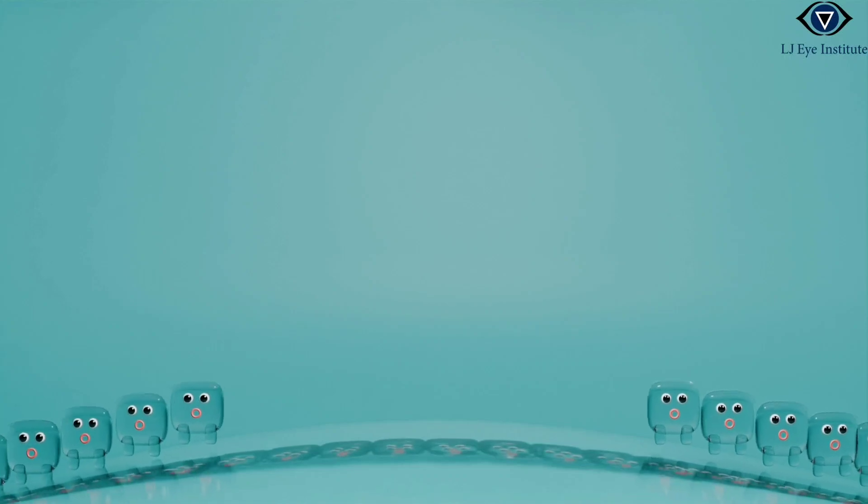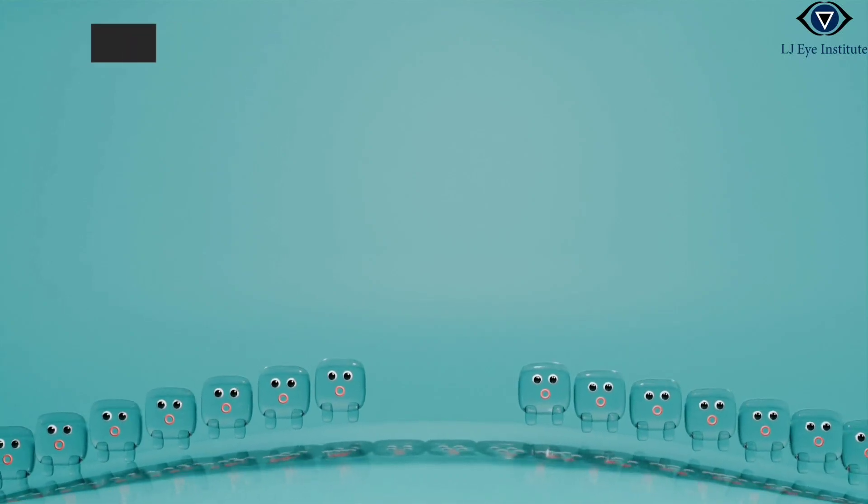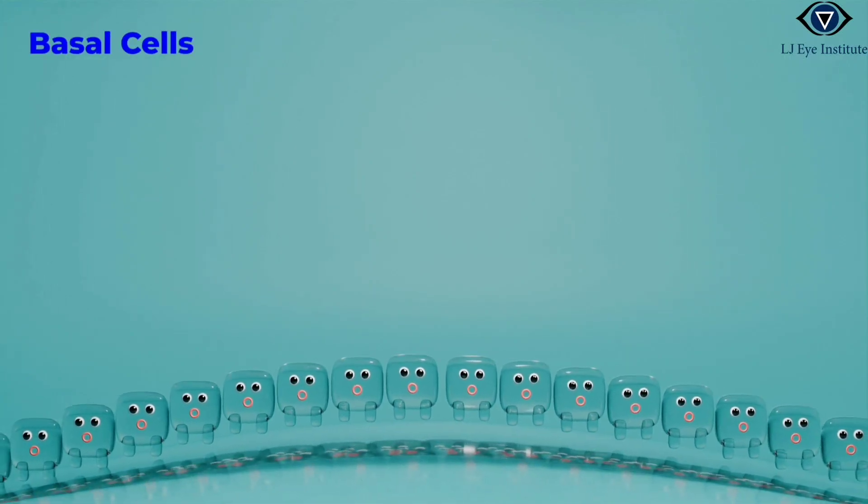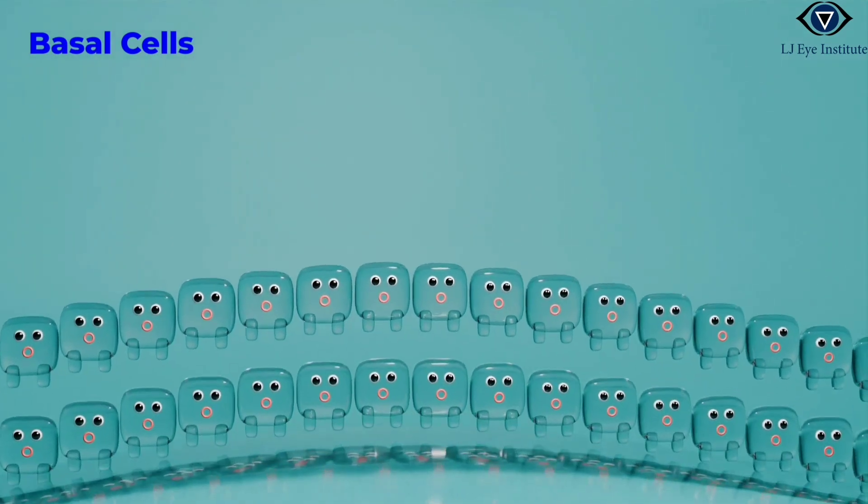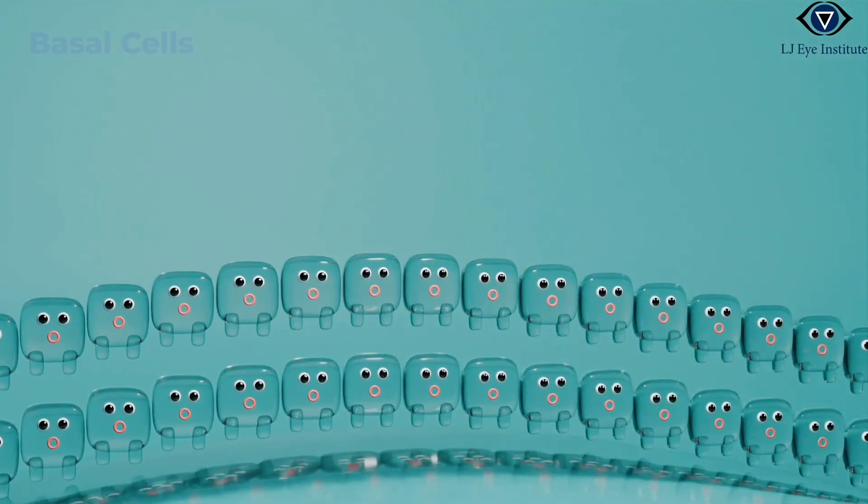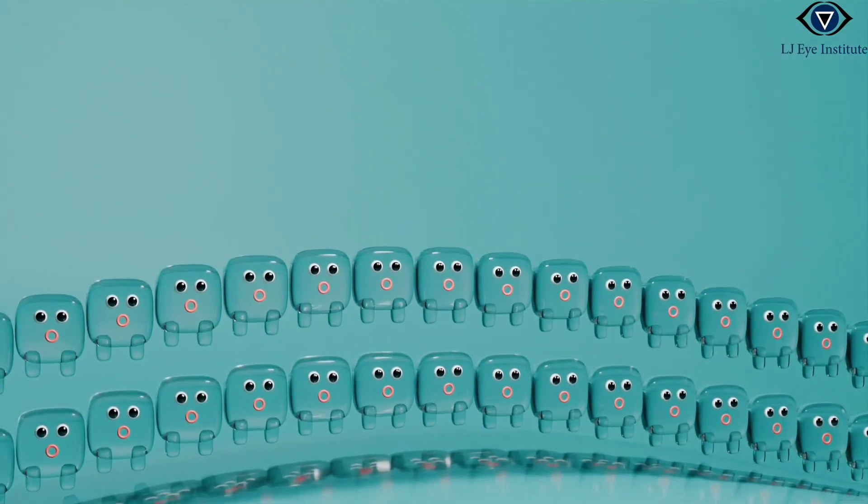Structured in layers, the corneal epithelium acts as a resilient sheet. The basal layer, closest to the limbus, is the birthing ground where the cells undergo mitosis, generating a constant supply of new warriors.